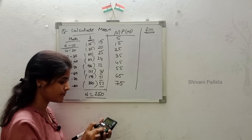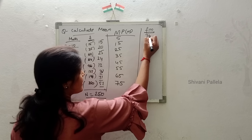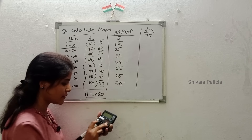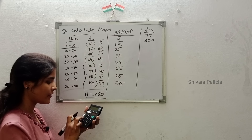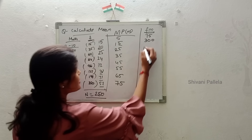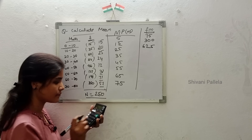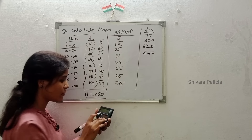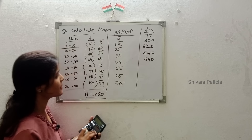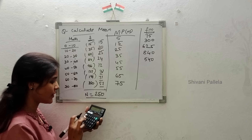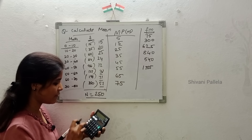Calculating F×M: 15 into 5 is 75, 20 into 15 is 300, 25 into 25 is 625, 24 into 35 is 840, 12 into 45 is 540, 31 into 55 is 1705, and 71 into 65 — continue calculating each row.